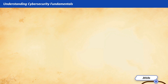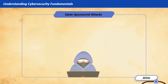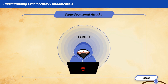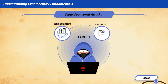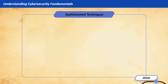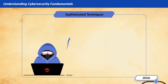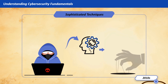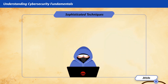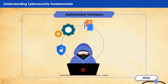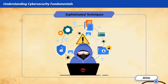Modern Cyber Threats — 2010s to Present. State-sponsored attacks targeting important infrastructure and businesses became more advanced. Modern hackers use advanced techniques like social engineering to manipulate people into giving away confidential information. The rise of ransomware as a service enables attackers to sell ransomware tools to less-skilled criminals, increasing the overall threat.